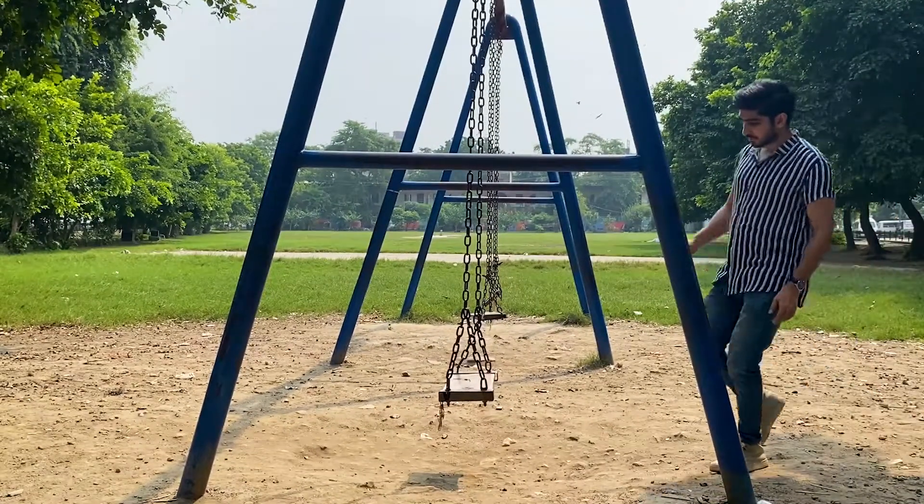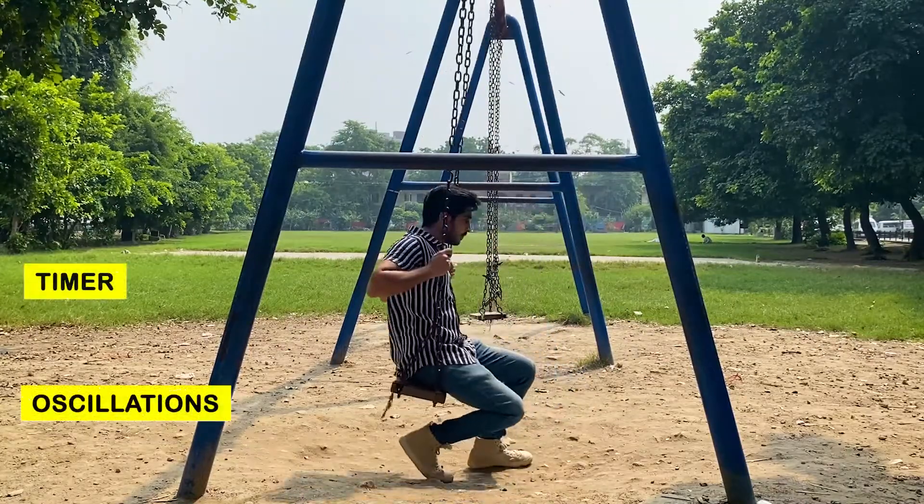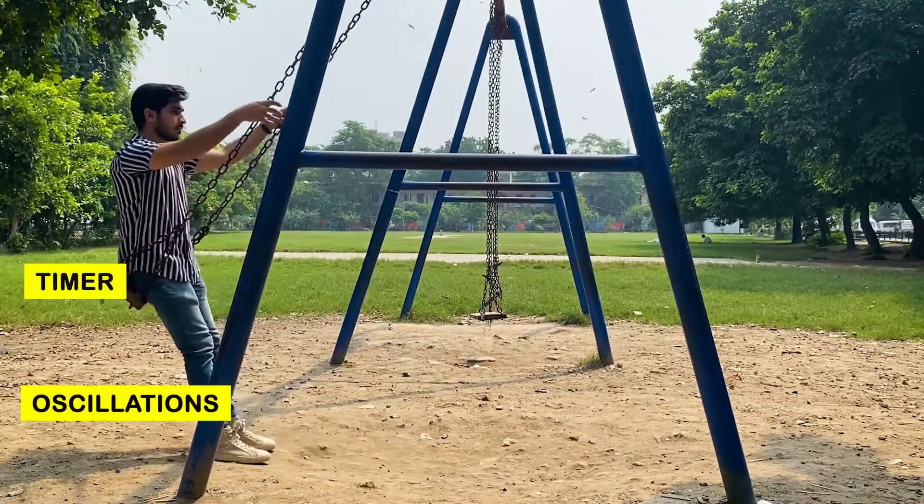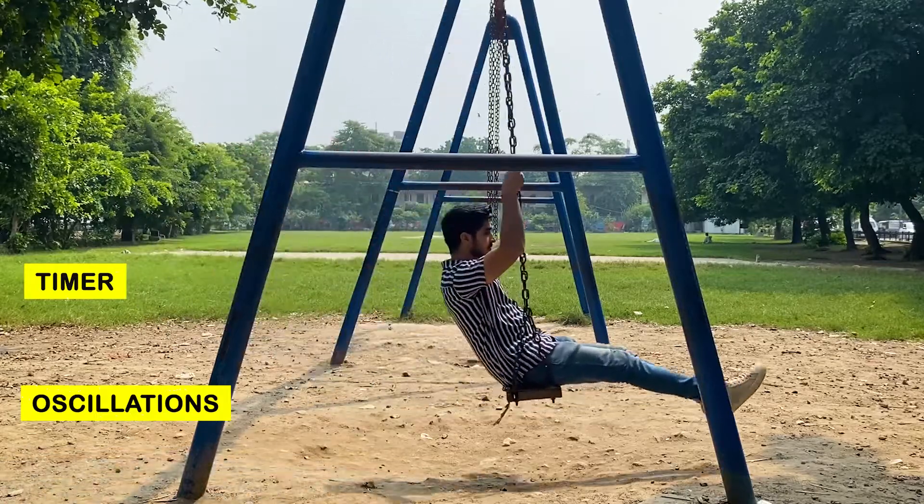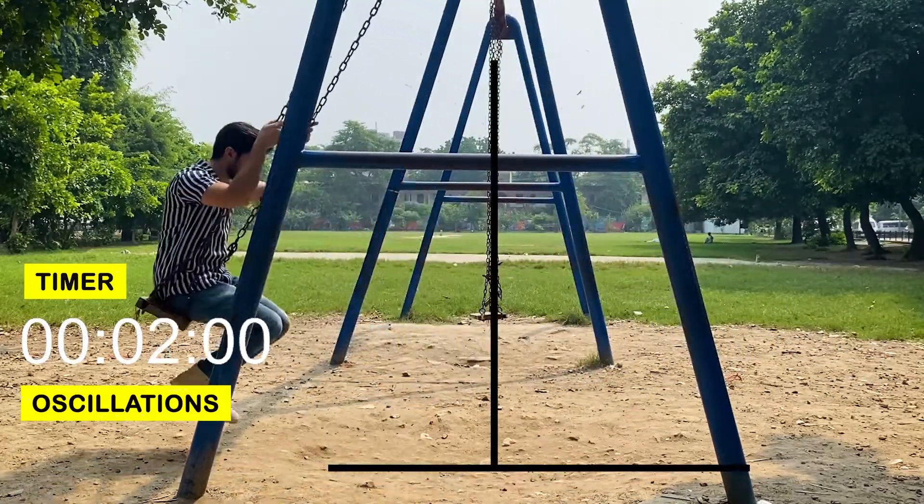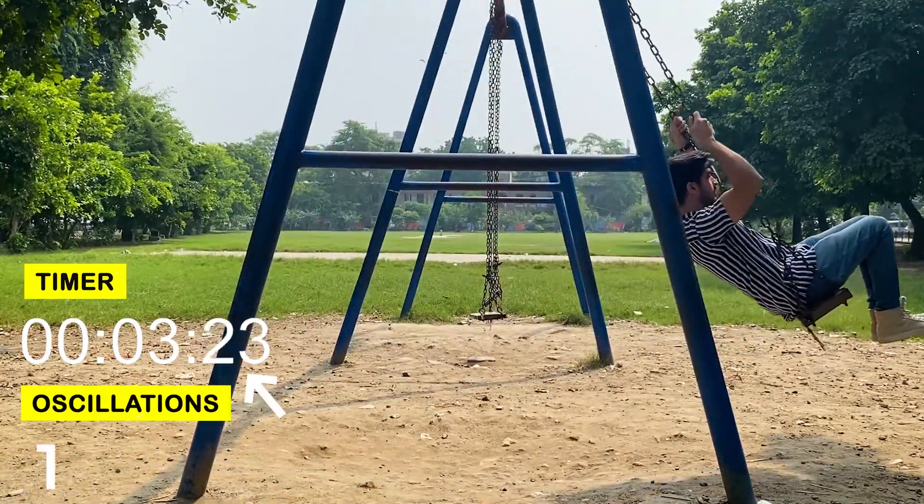Now we'll take a real life example. For this we need a swing and a person. A person starts to swing, and the stopwatch starts when the swing is perpendicular to the ground. Note the time T for 10 oscillations.